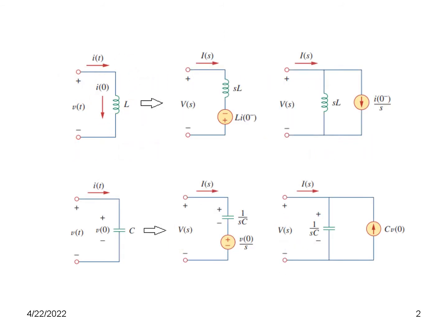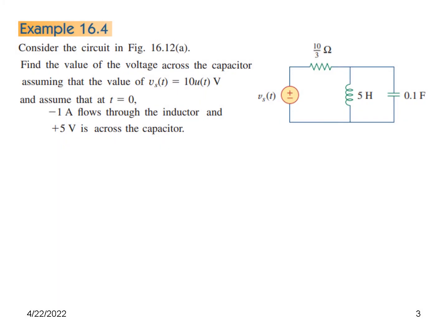I will recall that the inductor is in the s-domain, and we will show the series connection or parallel connection depending on the given circuit. For example 16.4, consider the circuit in Figure 16-12. Find the value of the voltage across the capacitor, assuming that VST equals 10u(t), and at T equals 0 minus, 1 ampere flows through the inductor, so I(0) equals 1 ampere.